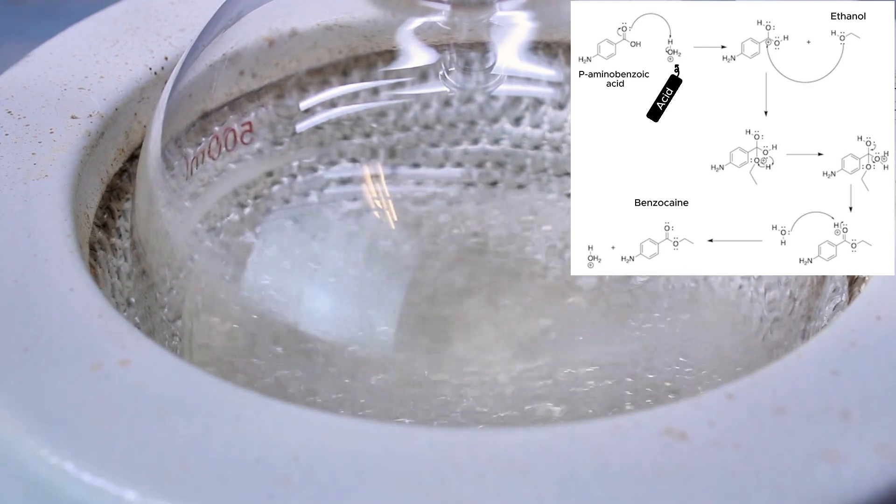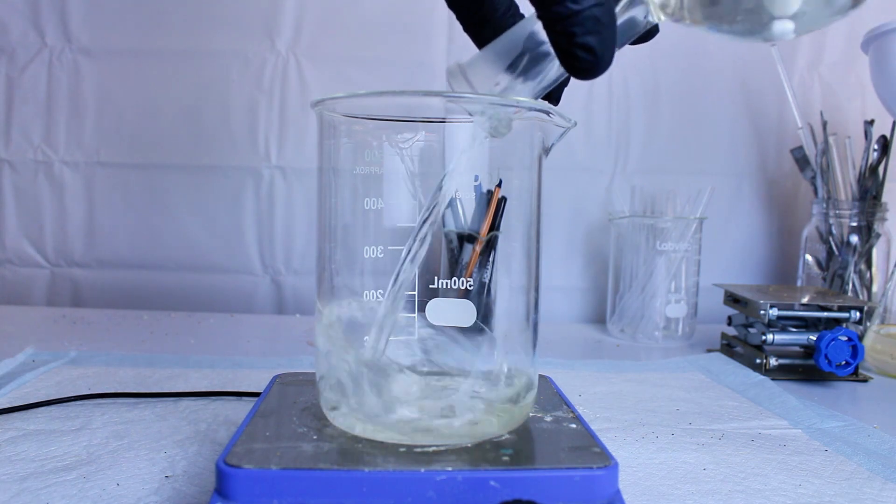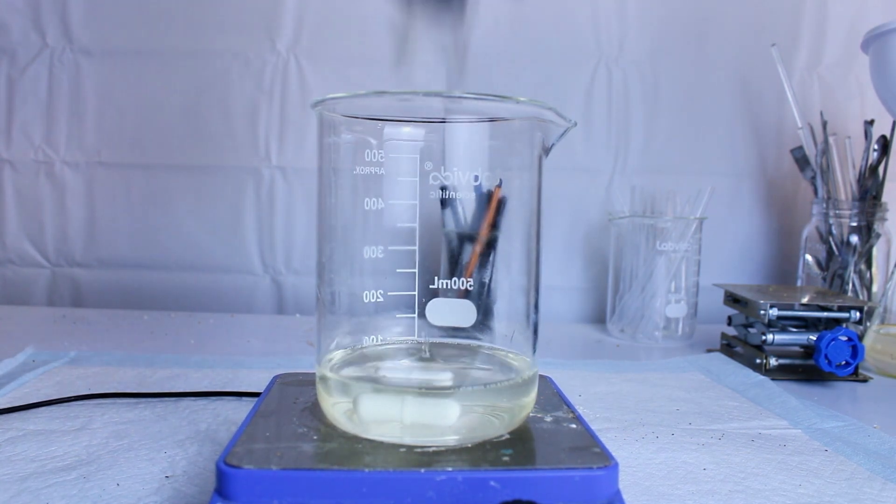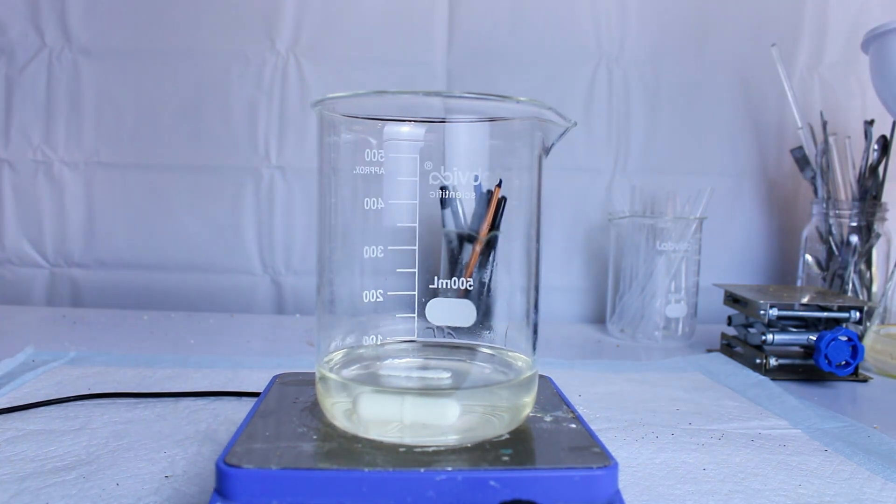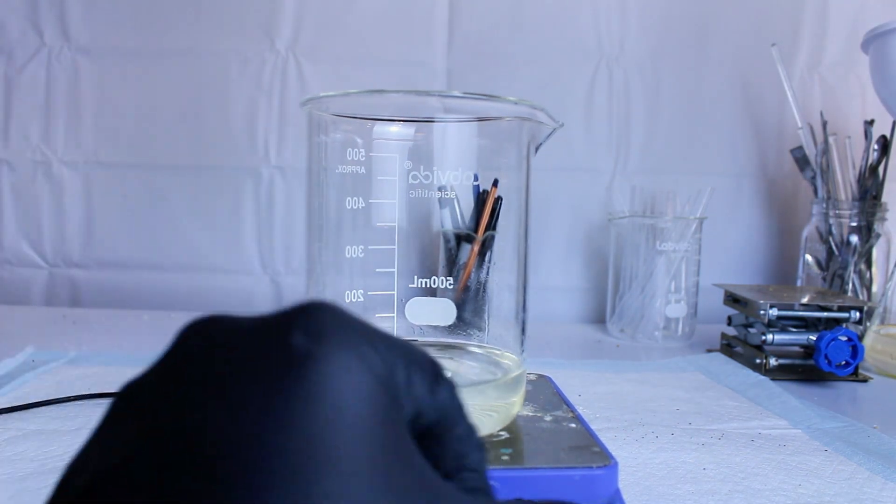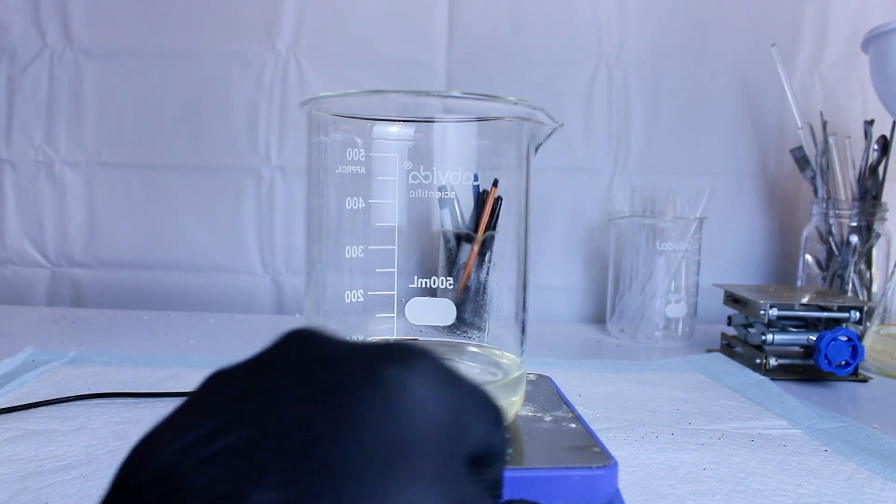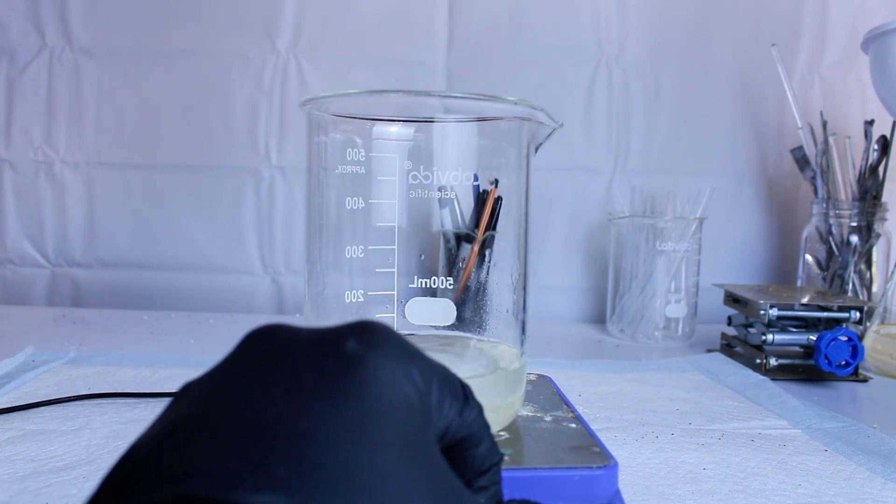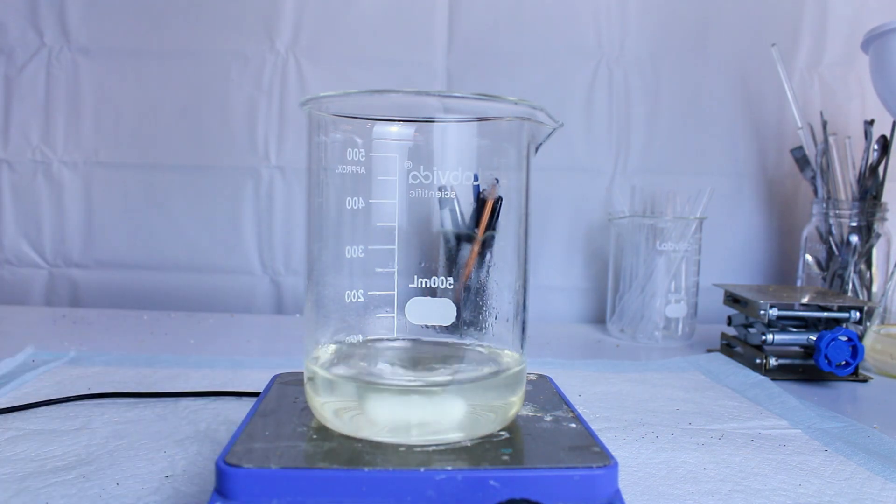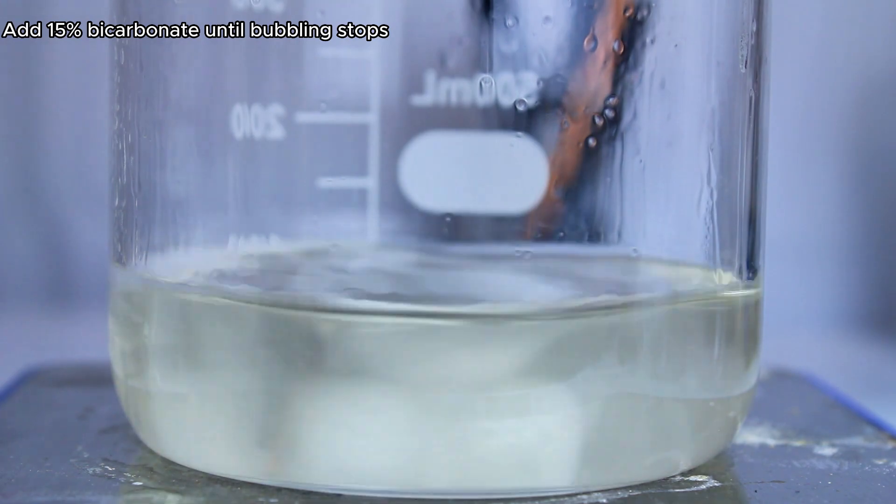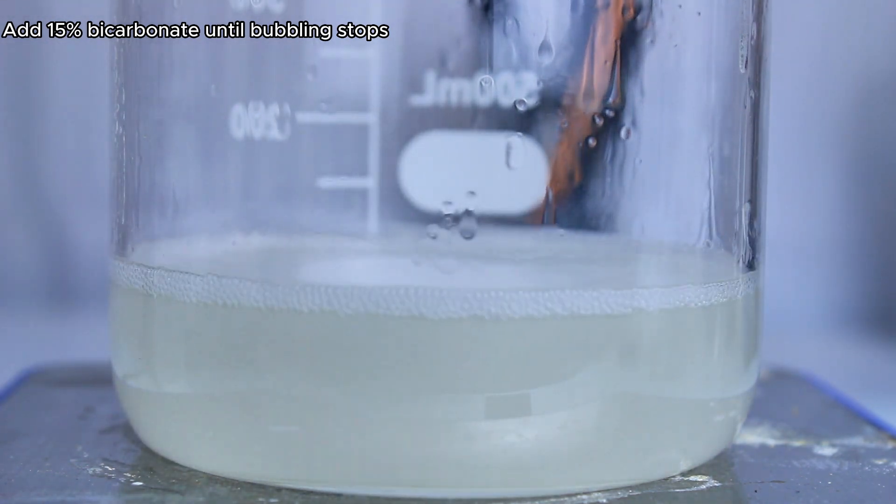This reaction is not reversible, and when the solution turns clear, it's done. Now to actually isolate my product, the first thing I want to do is neutralize all my excess sulfuric acid with sodium bicarbonate. To do this, I mix up a 15% sodium bicarbonate solution and slowly add it to my mixture until no more bubbling occurs. At that point, all the excess sulfuric acid should be neutralized to sodium sulfate, and the pH should be around 8.